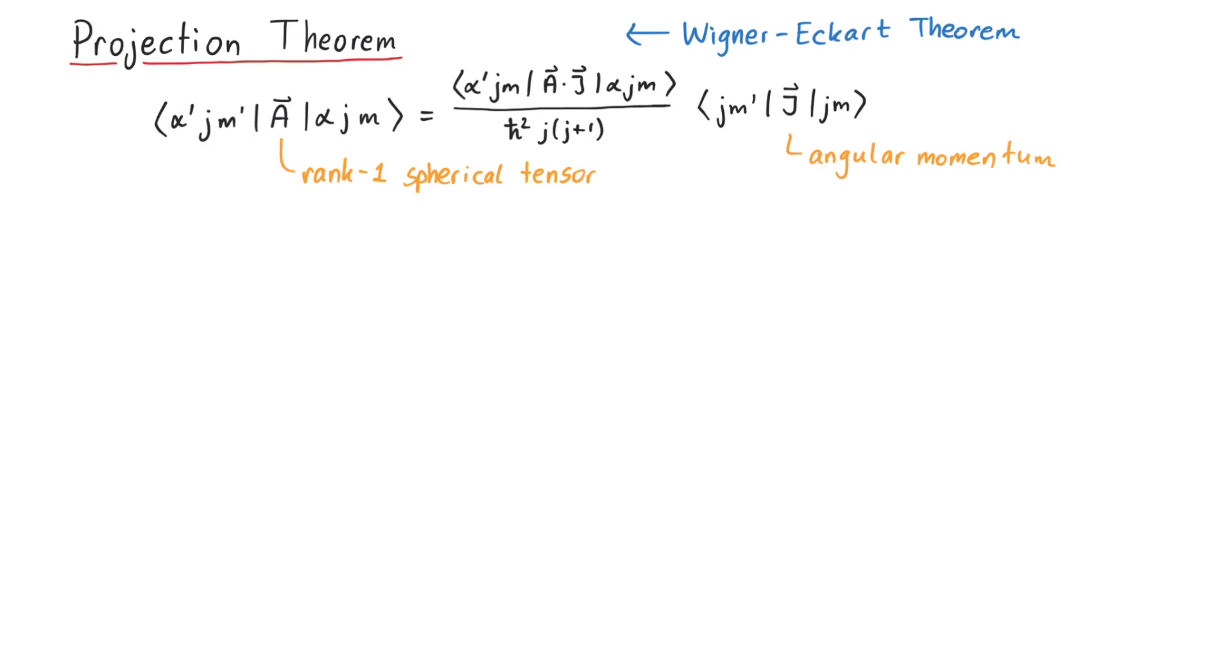To begin our derivation, let's consider those two matrix elements here, where A is a general vector operator and J is the angular momentum of the system. In the bra and ket states, j and m are the quantum numbers of angular momentum, and alpha represents all other quantum numbers which do not play a role here.